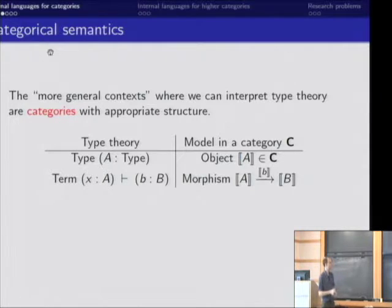Now, type theory is nice because it's very easy to talk about alternative models for type theory. Because if we have an arbitrary category with appropriate structure, then we can interpret type theory inside of that category.